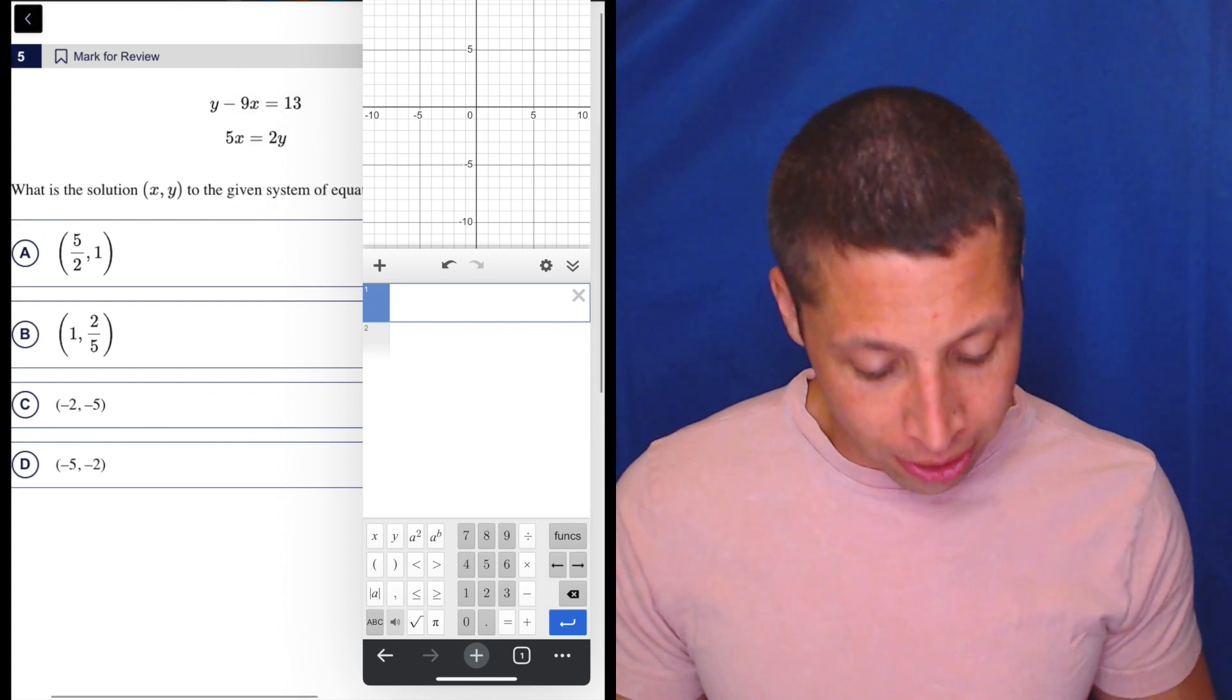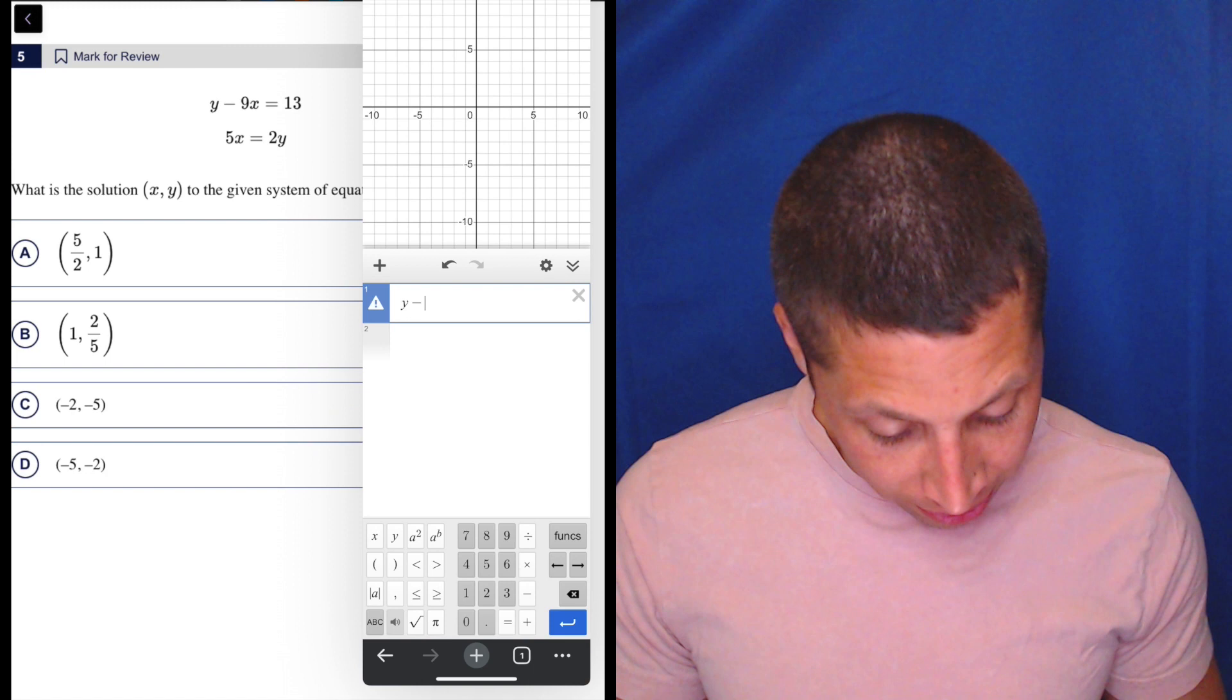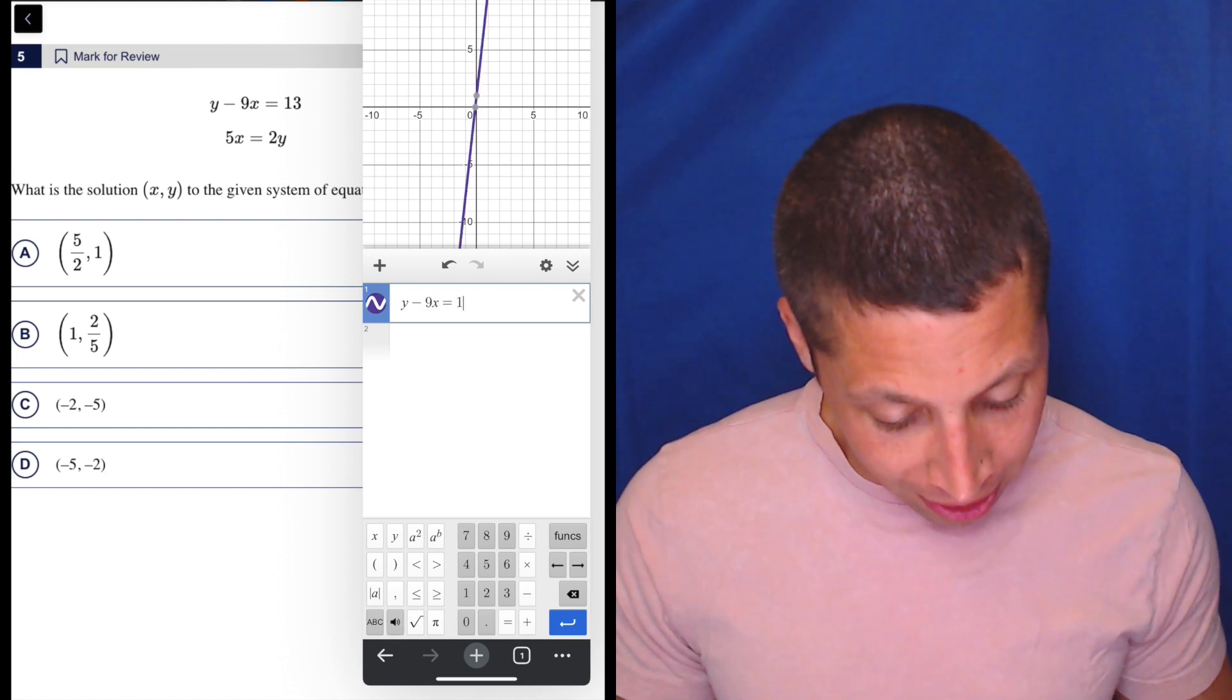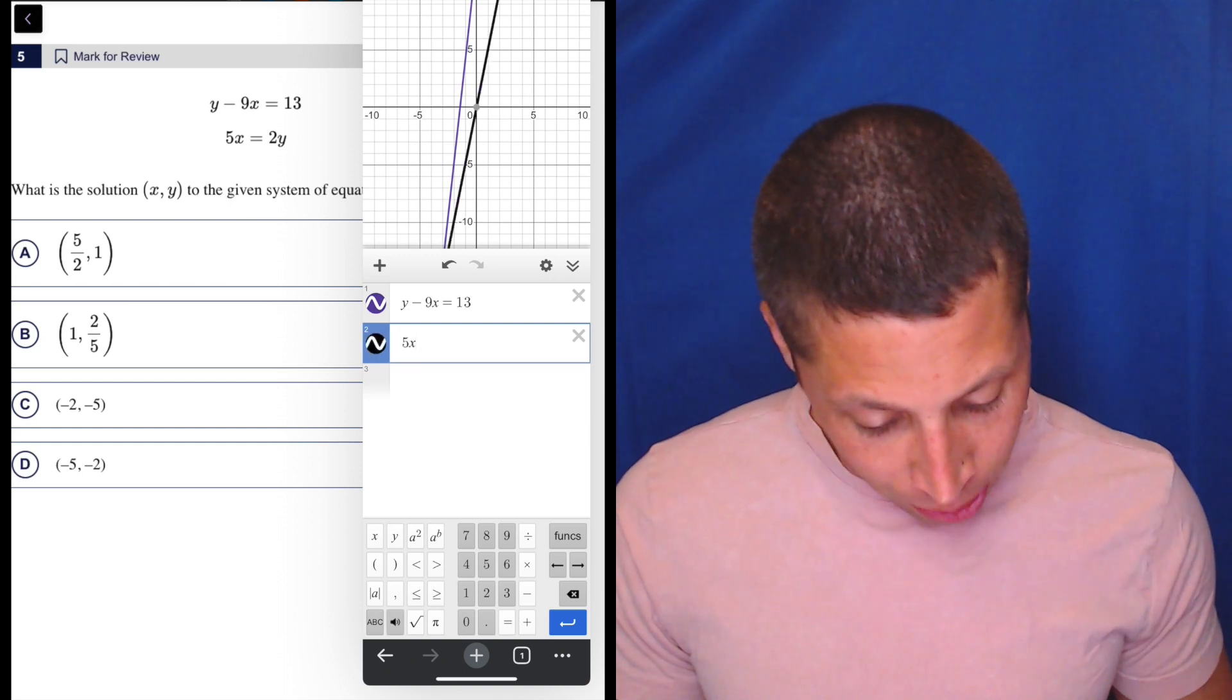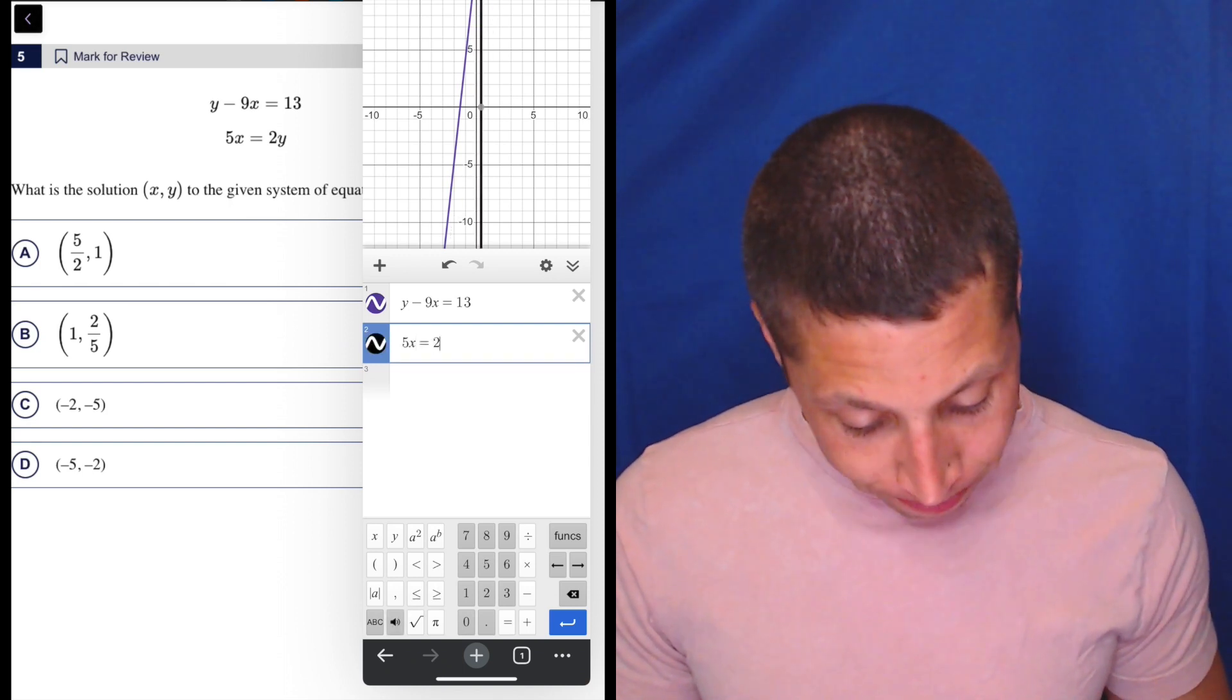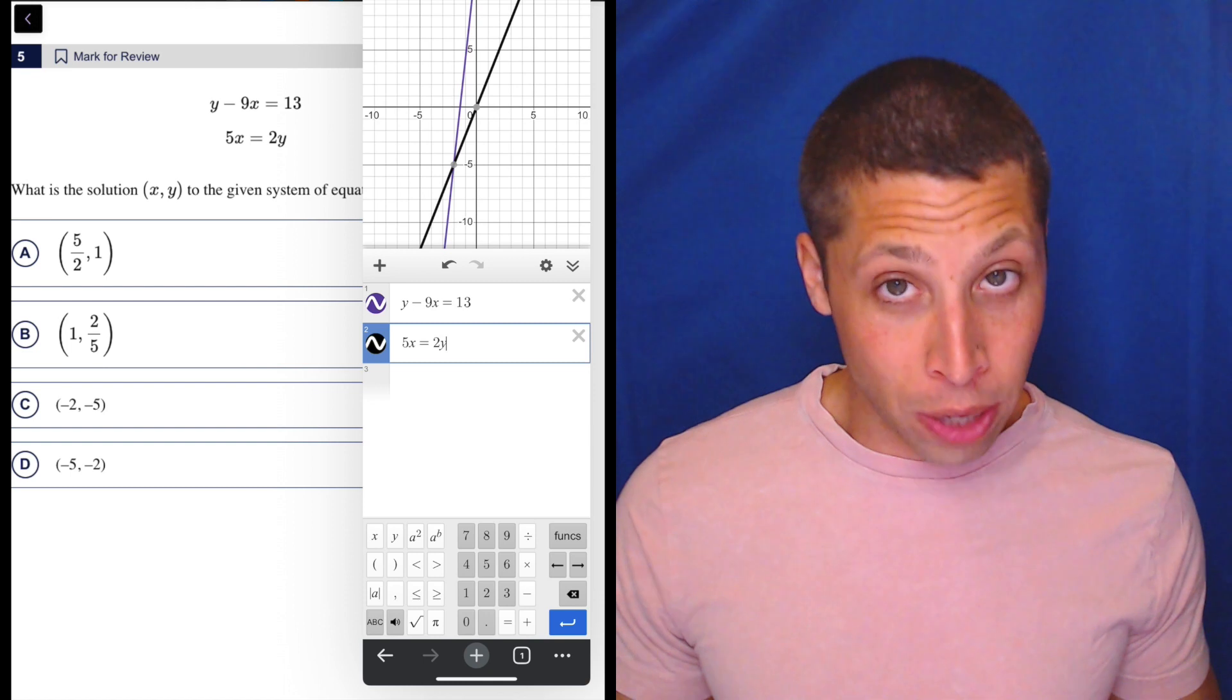So honestly, it doesn't take long. Just do y minus nine x is equal to 13, and then five x equals two y. And just double check that you typed it in correctly.